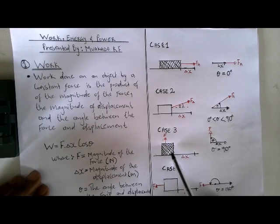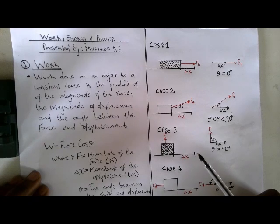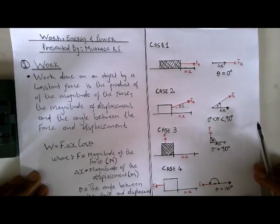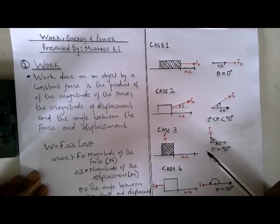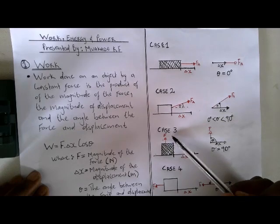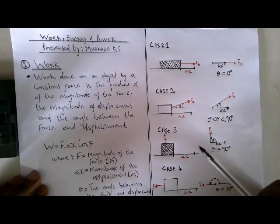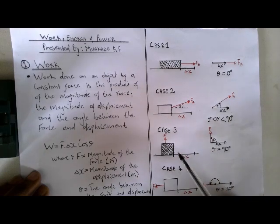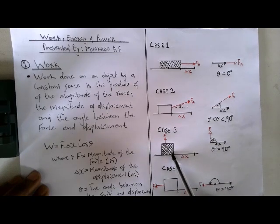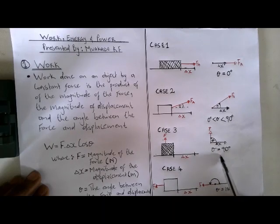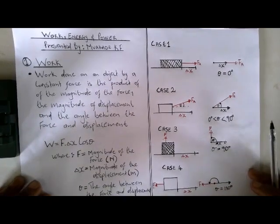Case three: the force is directed upward but the movement of the object is horizontal. An example would be a person carrying a briefcase. When you carry a briefcase with your hand, the force applied is upward, but your movement is either to the right or left — horizontal. So the force is upward while the displacement is horizontal, making the angle between the force and the displacement 90 degrees.